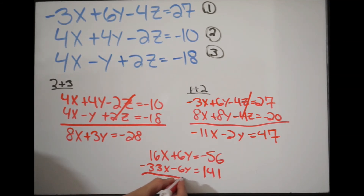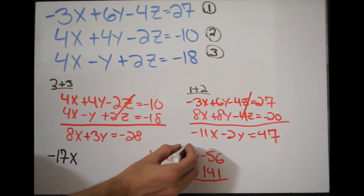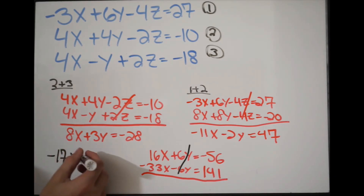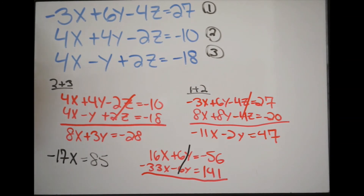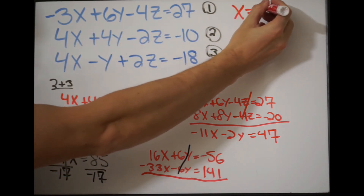Using addition, the y's cancel out. So we do 16x plus negative 33x, which gives negative 17x, and negative 56 plus 141 gives 85. Our last step is to divide both sides by negative 17. Plugging 85 divided by negative 17 into the calculator gives x equals negative 5. So x equals negative 5.